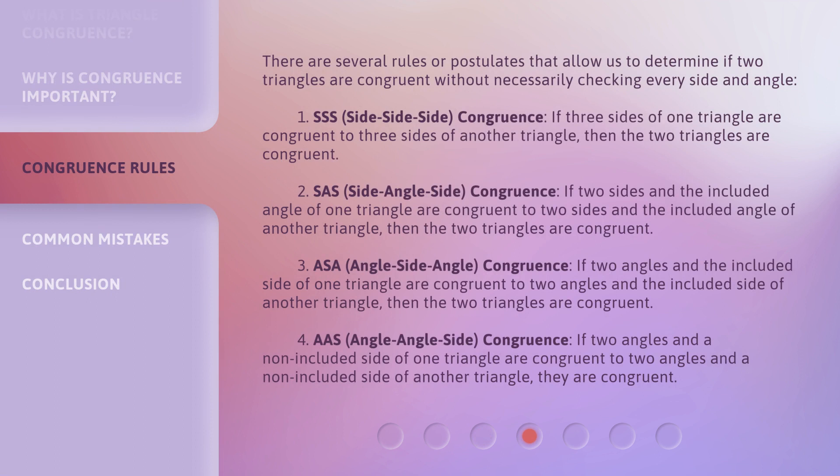There are several rules or postulates that allow us to determine if two triangles are congruent without necessarily checking every side and angle. The first is SSS: if three sides of one triangle are congruent to three sides of another triangle, then the two triangles are congruent.